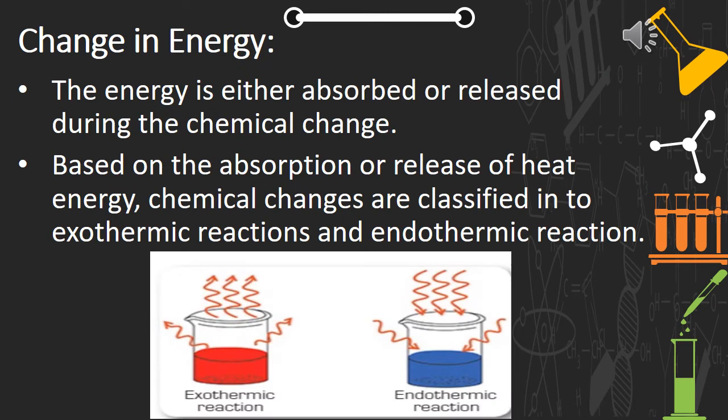The second characteristic is change in energy. In some chemical changes, the energy is either absorbed or released. This energy can be in the form of heat energy, light energy, or electrical energy. The most common type of change in energy is found with respect to heat energy.